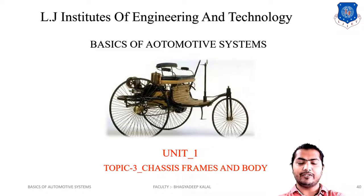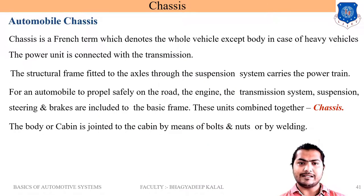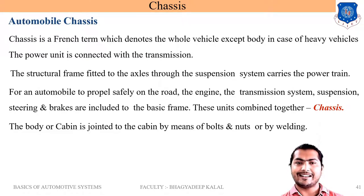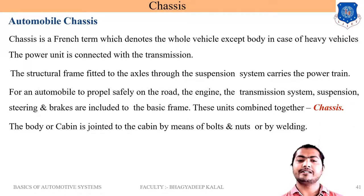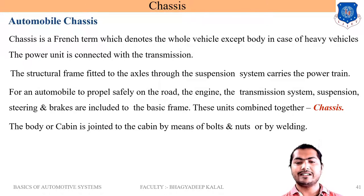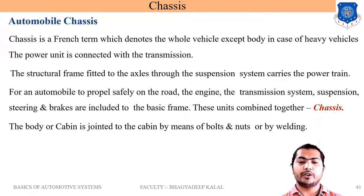Let's start with the definition of chassis. Automobile chassis is a French term which denotes the whole vehicle except the body. In the case of heavy vehicles, the power unit is connected with the transmission. The structural frame fitted to the axle through the suspension system carries the power train. For an automobile to propel safely on the road, the engine, transmission system, suspension, steering and brakes are included in the basic frame. The body or cabin is joined to the chassis by means of bolts and nuts or by welding.